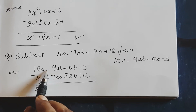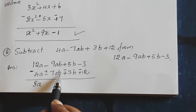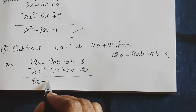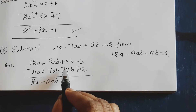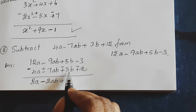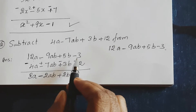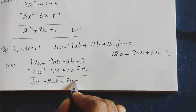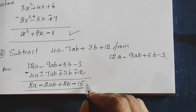Next: minus 9ab and positive 7ab — negative sign, 9 minus 7 gives minus 2ab. Then plus 5b minus 3b — positive sign is highest value, so 5 minus 3 gives plus 2b. Then minus 3 minus 12: same negative sign, 3 plus 12 gives minus 15. So the answer is 8a minus 2ab plus 2b minus 15.